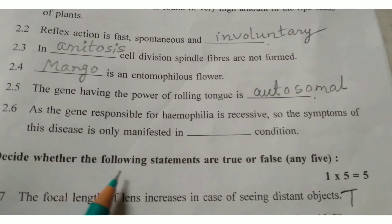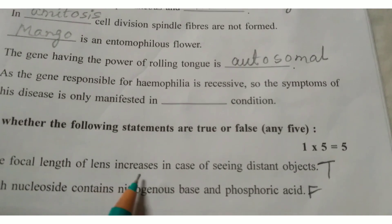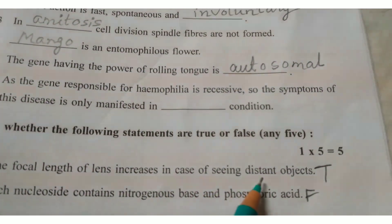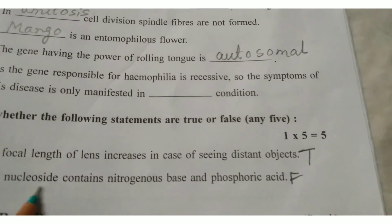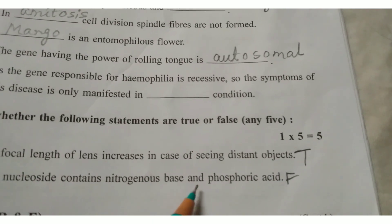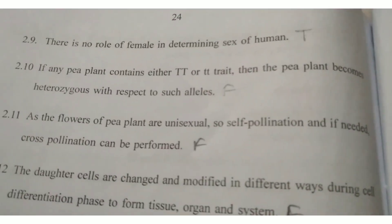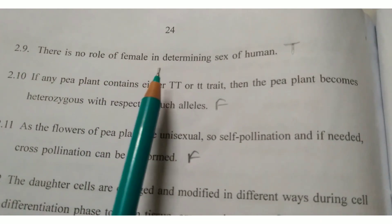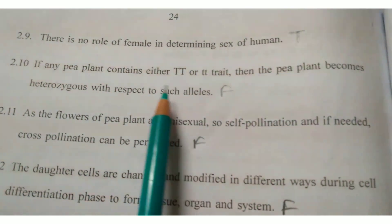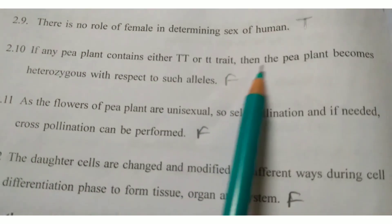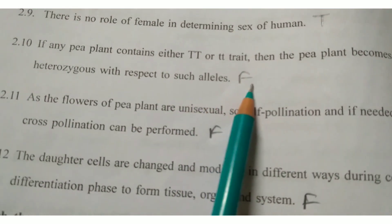Decide whether the following statements are true or false. Question 2.7: The focal length of lens increases in case of seeing distant objects. Write answer: True. Question 2.8: Each nucleoside contains nitrogenous base and phosphoric acid. Write answer: False. Question 2.9: There is no role of female in determining sex of human. Write answer: True. Question 2.10: If any pea plant contains either TT or tt traits, then the pea plant becomes heterogeneous with respect to such alleles. Write answer: False.